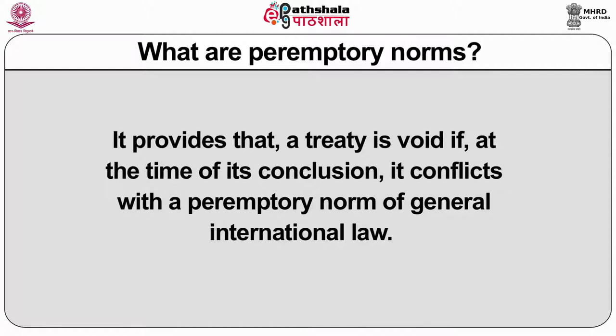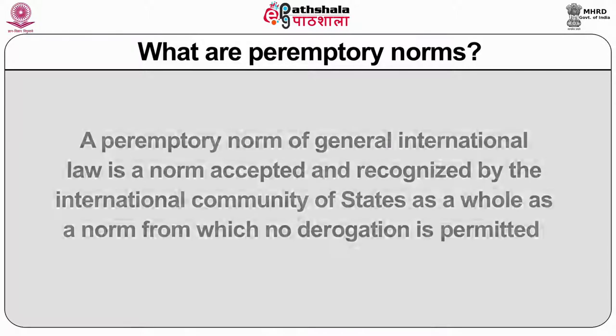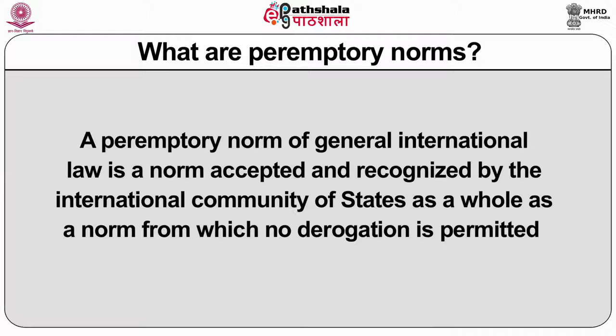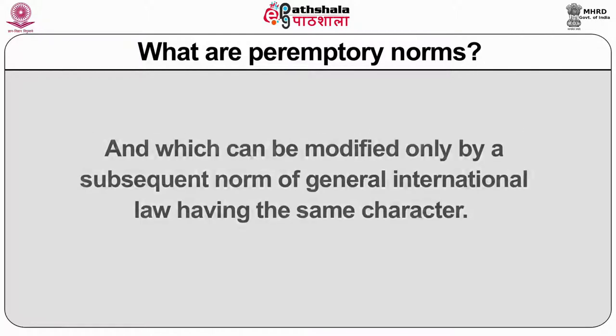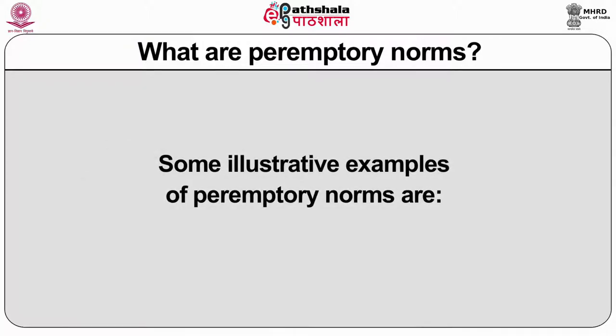It provides that a treaty is void if, at the time of its conclusion, it conflicts with a peremptory norm of general international law. A peremptory norm of general international law is a norm accepted and recognized by the international community of states as a whole as a norm from which no derogation is permitted and which can be modified only by a subsequent norm of general international law having the same character. Some illustrations and examples of peremptory norms: